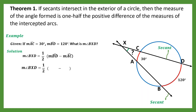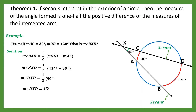So we have one half, then the measurement of arc BD is 120 degrees minus the measurement of arc AC which is 30 degrees. The difference is 120 minus 30, which equals 90 degrees. Then measurement of angle BXD is equal to 90 multiplied by one half, that will be 45 degrees. Therefore, that is the measurement of the angle formed by two intersecting secants — 45 degrees.